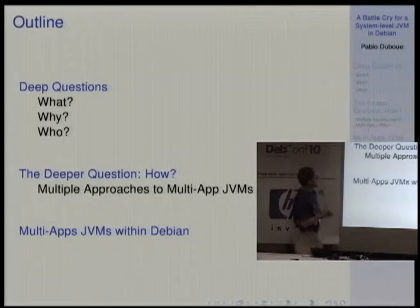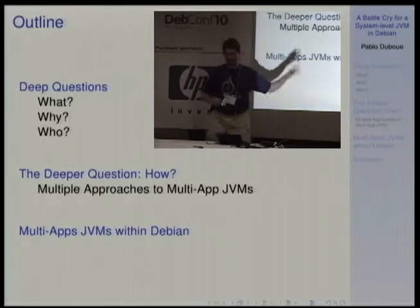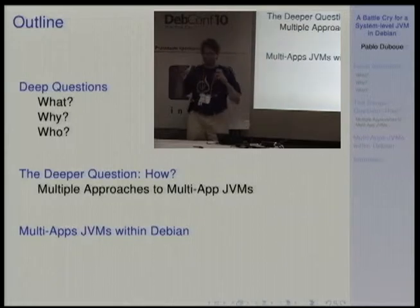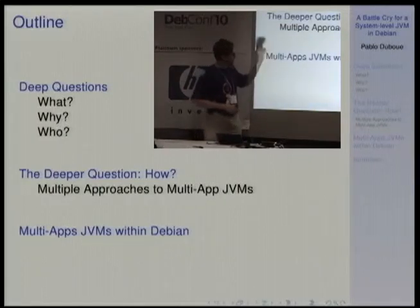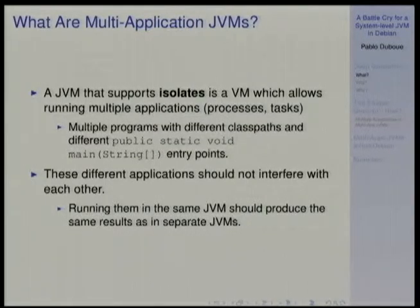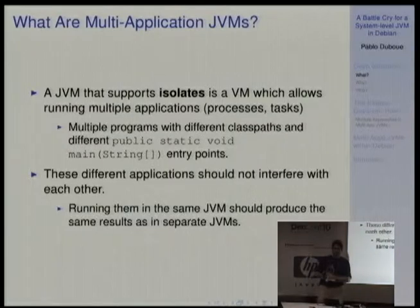So I'm going to talk — most of the talk is going to be about what it entails to build one of these multi-application JVMs, but I will first start explaining what they are and, most importantly, why we should care. So what are multi-application JVMs? The idea is to have a JVM that supports what is called isolates — virtual machines that allow multiple applications or processes, basically things that have a public static void main and different class paths, to be running on the same virtual machine.